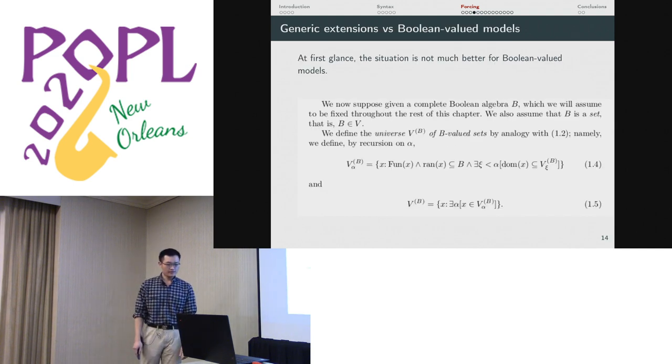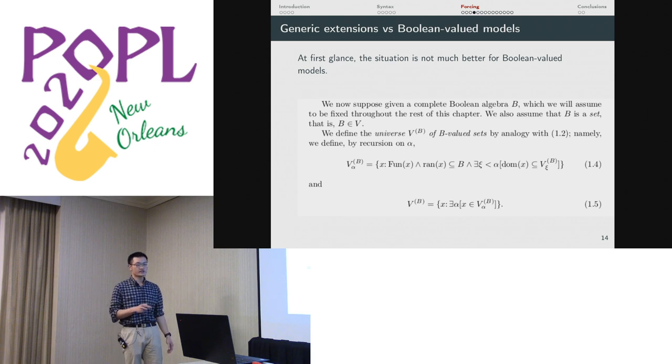If you look at the formulation of Boolean-valued models, there's another transfinite induction on rank. You start with a universe of sets to begin with, which is already not so good if you're looking to translate things into type theory, and then you do a transfinite induction on rank. So that was the first challenge. We had to figure out how to encode the forcing argument, which is typically phrased inside of set theory, and we have to find a way to do it inside of type theory.